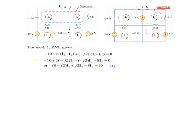For mesh one, using the direct technique: minus ten, and all terms associated with I1 give (8 - j2)*I1. Terms shared with other meshes get a minus sign: minus 8*I3, and minus(-j2)*I2 which is plus j2*I2. Combining like terms gives the final equation for mesh one.